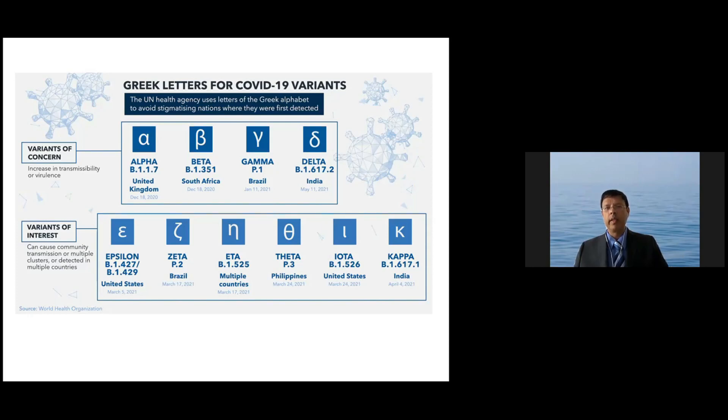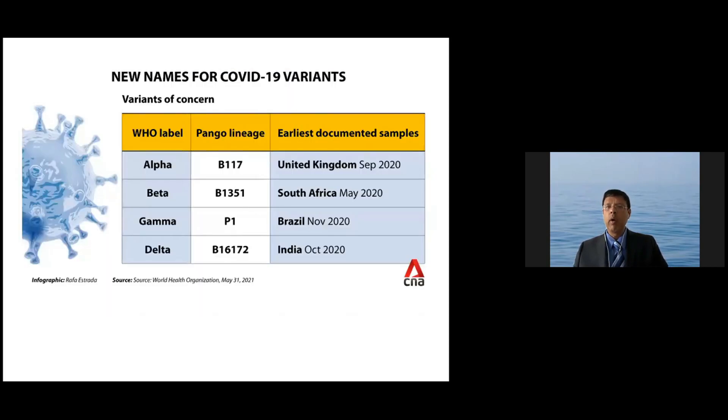So now the variants of concern are called alpha, beta, gamma, or delta. Alpha is for the original UK variant, beta is for the South African variant, gamma is for the Brazilian P1, and delta is for one of the Indian variants—that is the sub-variant two of the Indian variant. And then you had the variants of interest, which are also named using the Greek letters of the Greek alphabet as given in the slide there. So the important variants of concern are alpha, beta, gamma, and delta.